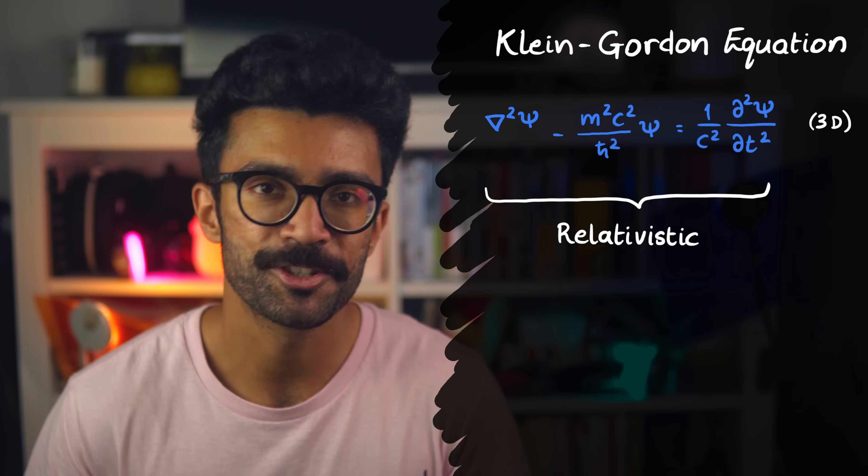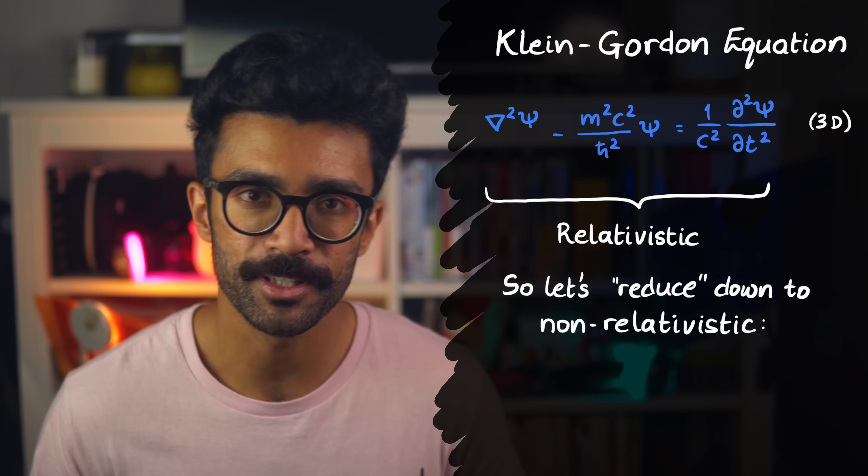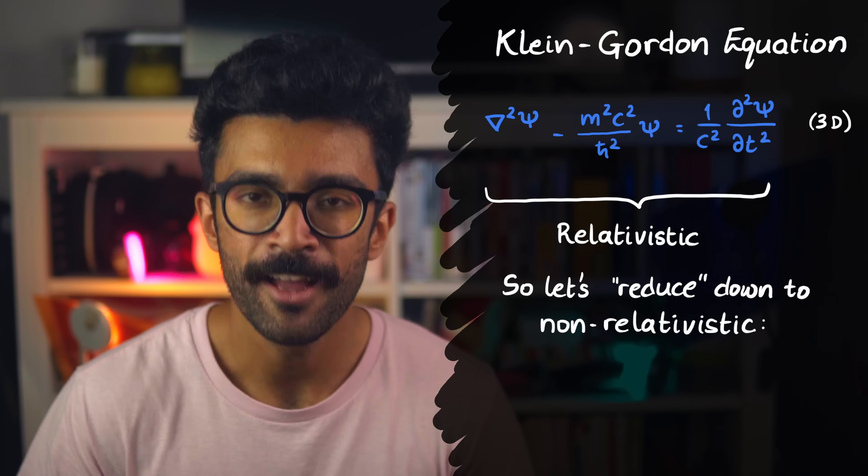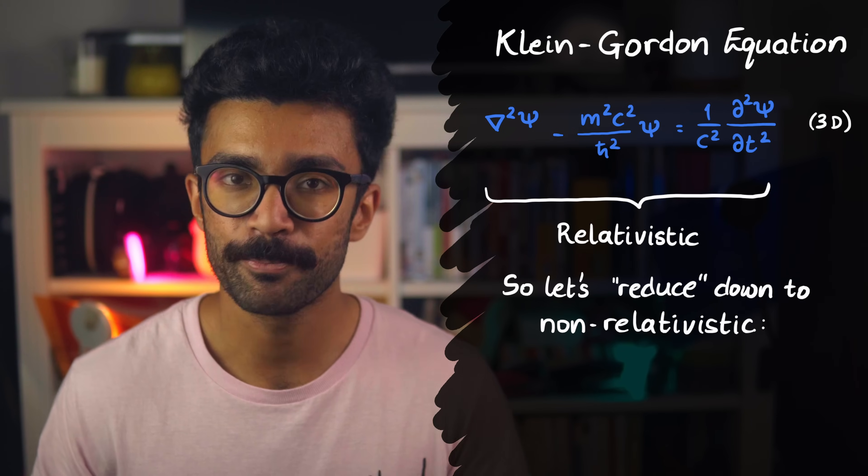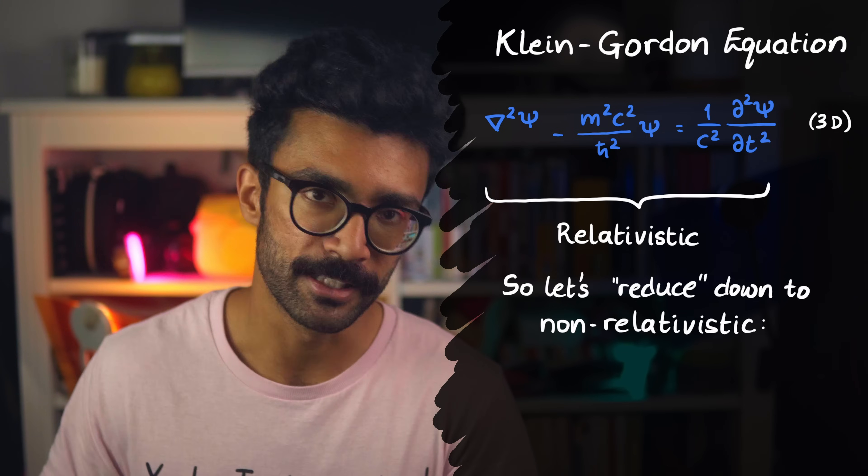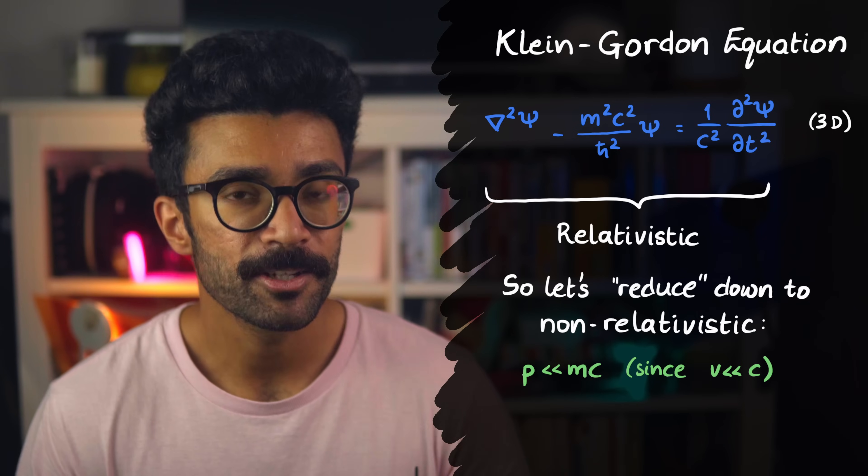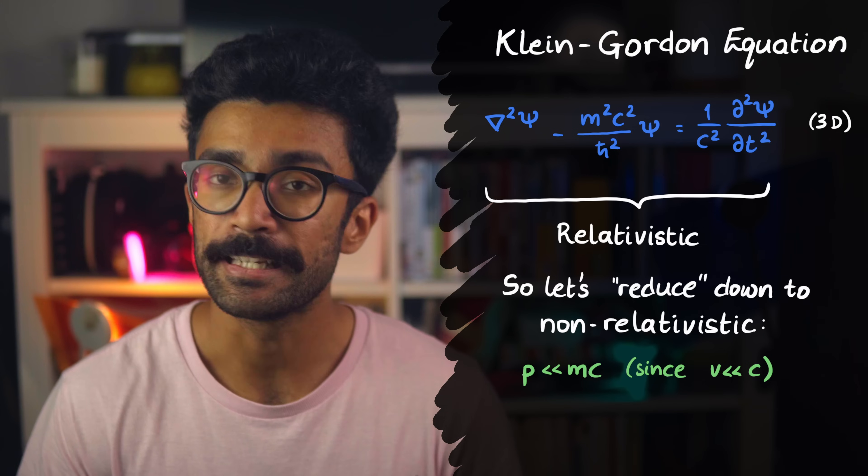But what we're trying to do here is get to the Schrödinger equation. So what we then need to do is reduce the Klein-Gordon equation down into non-relativistic scenarios. Relativistic effects become noticeable when we're studying objects moving at high speeds, as we've just said. So we can choose to restrict the equation to low speeds, where relativity won't bother us. We do this by realising that the speed of any particle we study, v, will be much smaller than c, the speed of light.